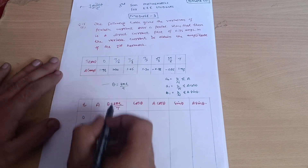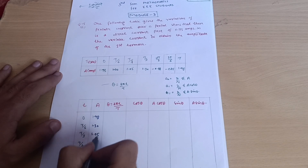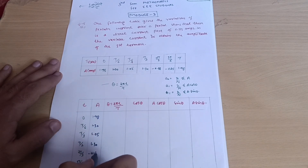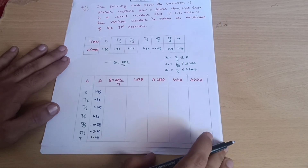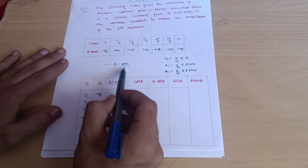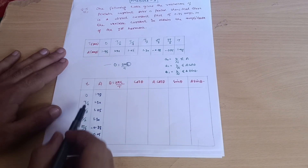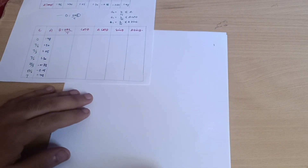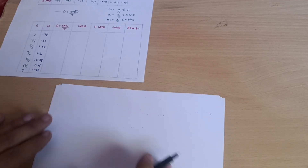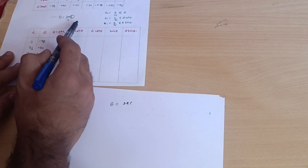First, write down the a values: 1.98, 1.30, 1.05, 1.30, −0.88, −0.25, and 1.98. Now let's calculate the θ values. Using θ = 2πt / T, the small t is given in the problem and T (the period) is also given.